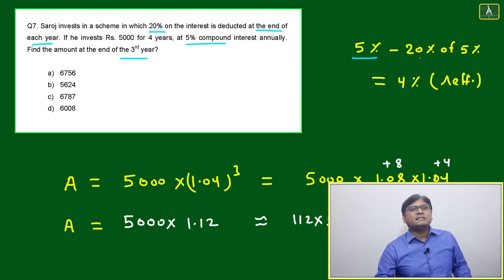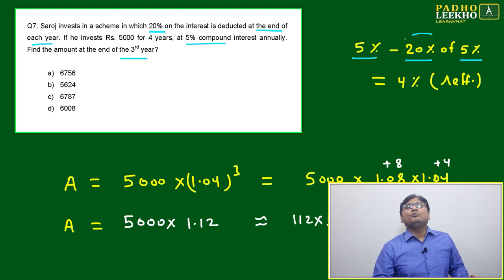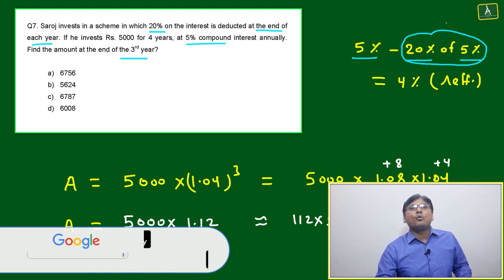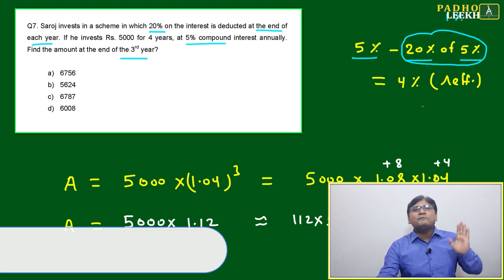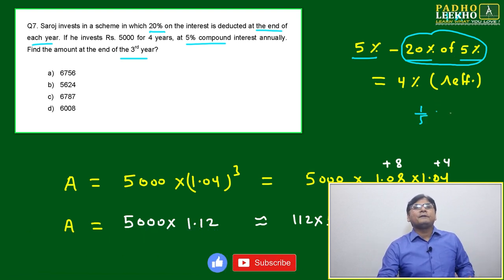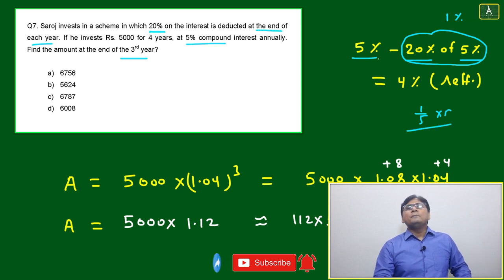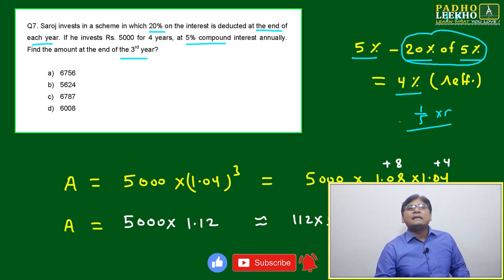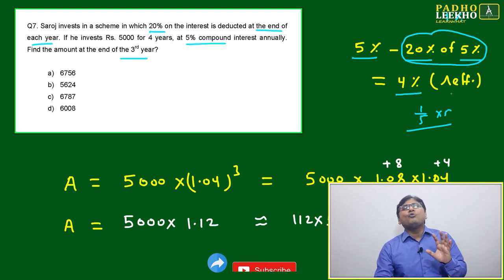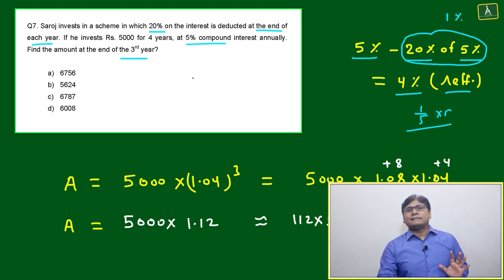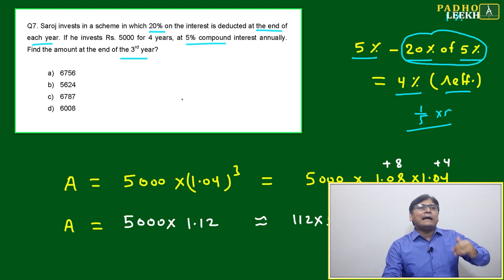This is percentage of percentage calculation: 20% of 5 means 1/5. 1/5 will be 1%. Means this will become 1%. It's simple, not complicated. 20% of 5% means 1/5 of 5, it will become 1%. Means 5% minus 1%, effectively during one year he is getting 4% effective interest. Actually it is 5%, and 20% on the interest he is giving as tax, so the effective interest comes down to 4%.